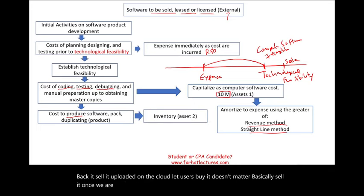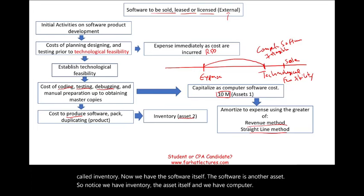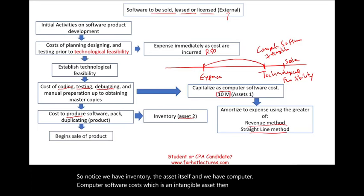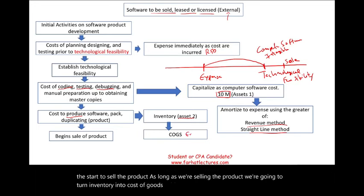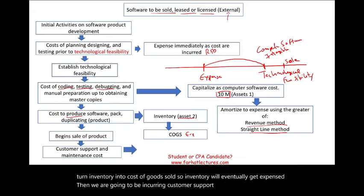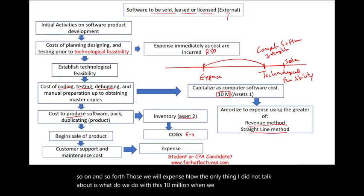Once we are selling the product, we're going to have another account called inventory. The software itself is another asset. So notice we have inventory — the asset itself — and we have computer software cost, which is an intangible asset. Then we are going to start to sell the product. As we sell, we're going to turn inventory into cost of goods sold, so inventory will eventually get expensed. We're also going to be incurring customer support, maintenance costs, and training — those we will expense. The key question is what do we do with that $10 million recorded as computer software cost?